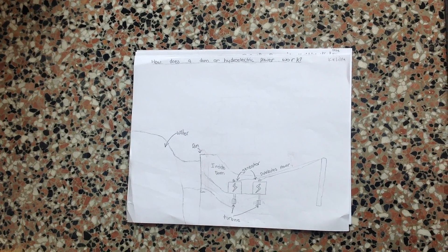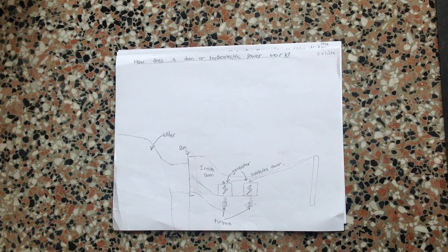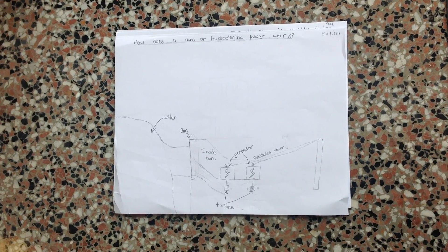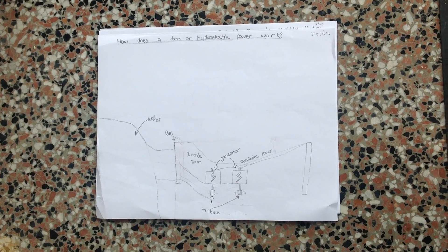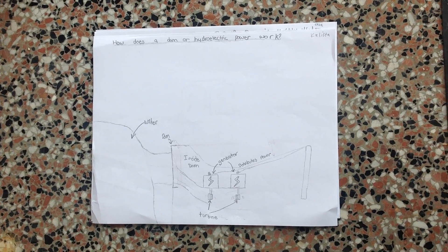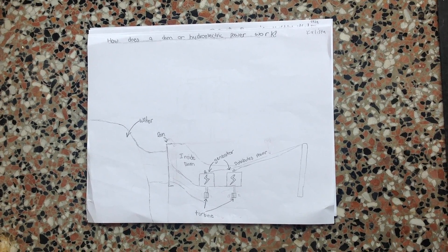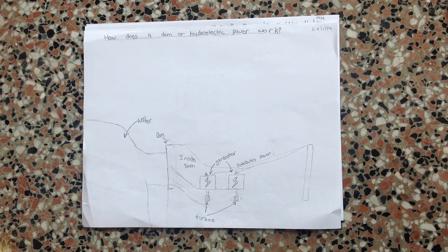The process starts at the dam. Water flows in through the dam from the water source. When the water flows in, turbines spin so that the generator can create electricity and distribute the power through power lines.